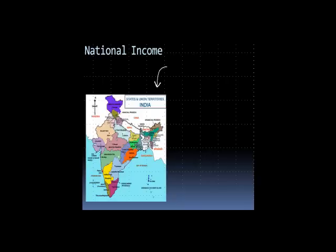So if you see, this is the map. If you are sitting anywhere in India — this place, this place — and you are producing any of the goods or services and you're producing income, then that is going to be included in the national income.